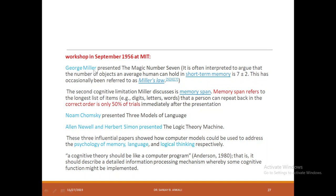Let us talk about the milestone workshop that happened at MIT during 1956. George Miller proposed the magic number seven, where he talked about the short-term memory of the human brain. He said that at a time we can hold just seven plus or minus two words or pieces of information — this theory is called Miller's Law. He also concluded that whenever a big list is given containing digits, letters, and words, the probability that a person can recall the same list in the same order is just 50%.